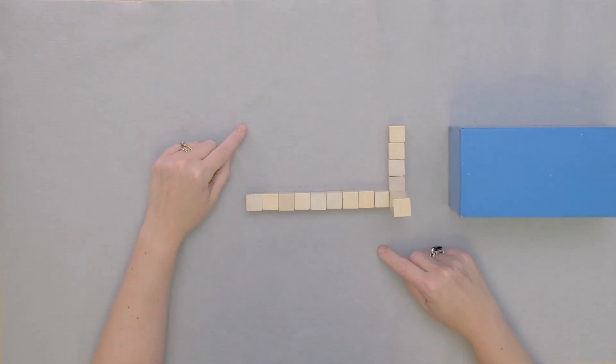Now if we wanted, we could fill the rest of the space in with unit cubes to find the volume of this rectangular prism. But do we need to do that?